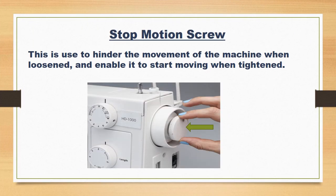Stop Motion Screw. This is used to hinder the movement of the machine when loosened, and enable it to start moving when tightened.